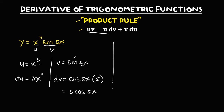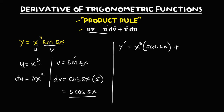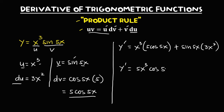From the product rule formula, we substitute all the values. So y prime equals u times dv, that is x to the power 3 times 5 cosine 5x, plus v times du, which is sine 5x times 3x to the power 2. So we have y prime equals 5x to the power 3 cosine 5x plus 3x to the power 2 sine 5x. This is the derivative.